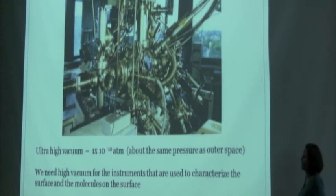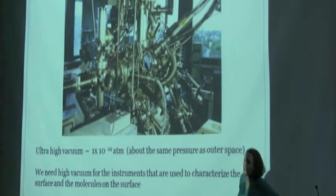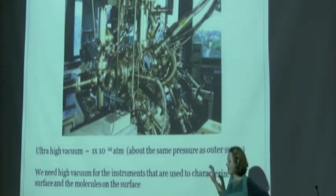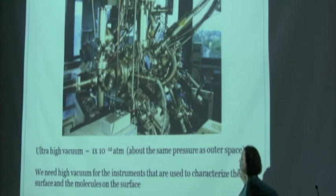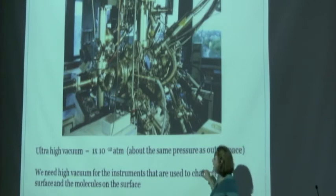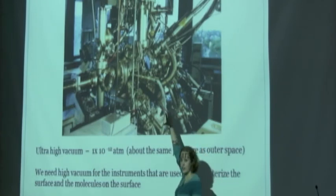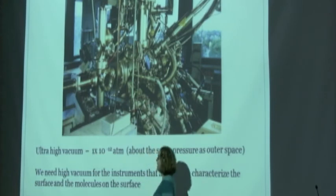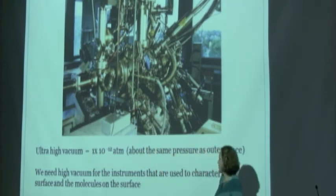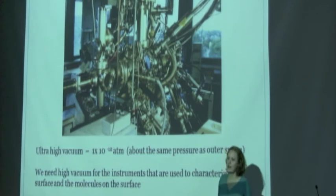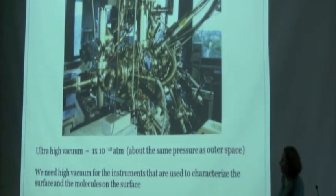This is the type of instrument that I use, and this is called an ultra-high vacuum chamber. It has lots of pumps on it—there are pumps down in this area—and it decreases the pressure inside this area to a pressure that is about the same as the outer atmosphere. We need these low pressures for the instruments that we use to characterize the surface.